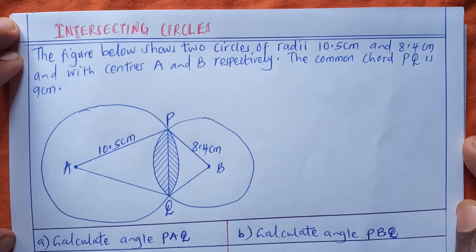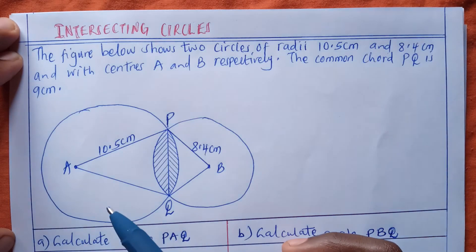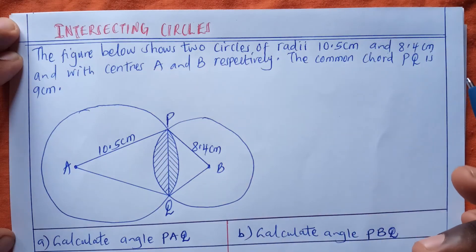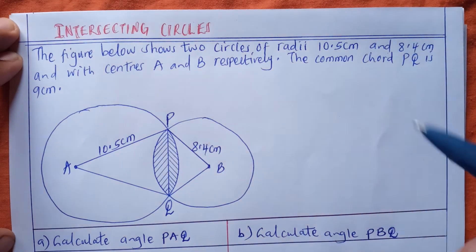Hello and welcome to this presentation. I'm going to do something on intersecting circles. The figure below shows two circles of radii 10.5 centimeters and 8.4 centimeters with the centers A and B respectively. These are the centers A and B. The common chord PQ is 9 centimeters.